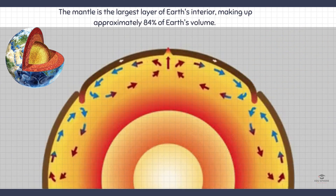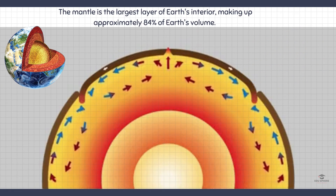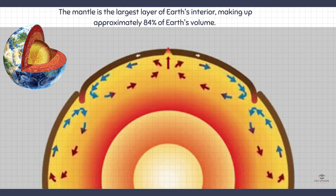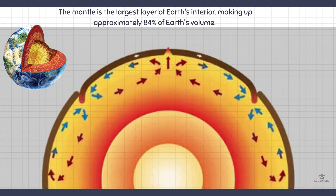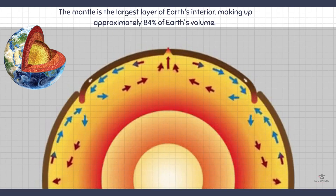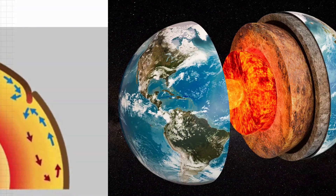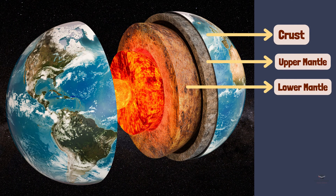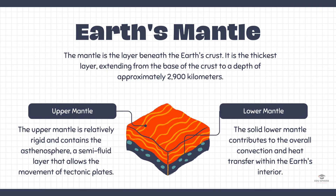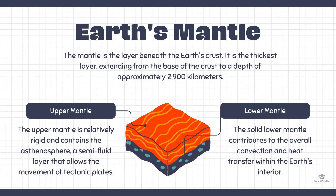The mantle is the second layer of the Earth and it resides beneath the crust. This region makes up roughly 84% of the Earth. It is divided into two main parts: the upper mantle and the lower mantle. The upper mantle is attached to the layer above it, that is the crust.